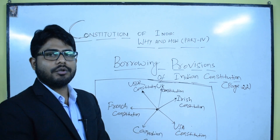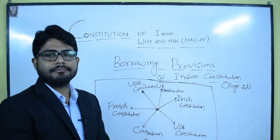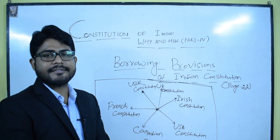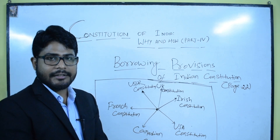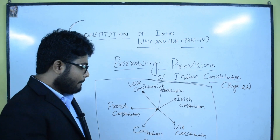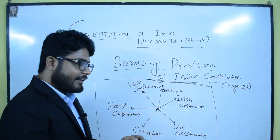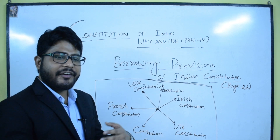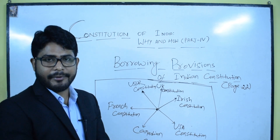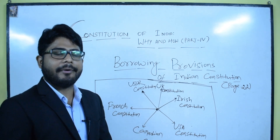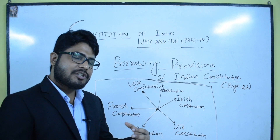Next is the USA Constitution. From the USA Constitution, we borrowed the judicial system and fundamental rights. These things are borrowed from the USA Constitution. From the Canadian Constitution, we borrowed the quasi-federal form of government.